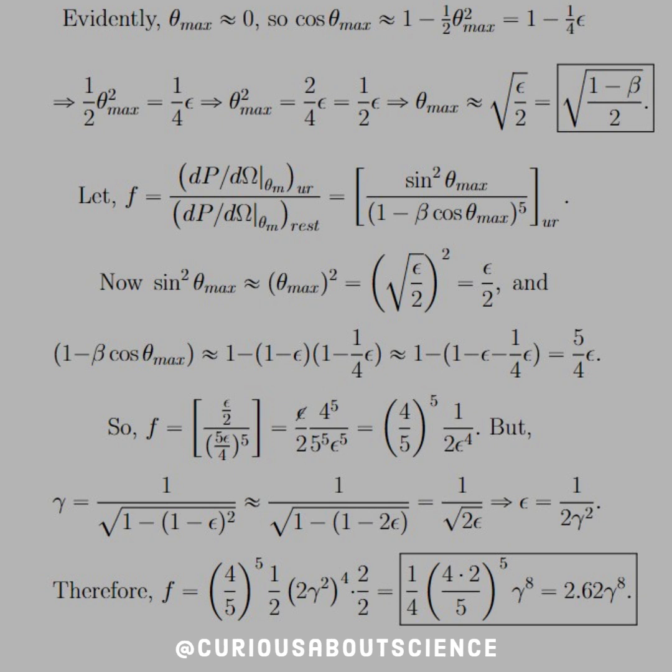So simplify accordingly. So now the ratio becomes epsilon over 2 divided by 5 epsilon over 4 to the fifth power. Cancel away as you see fit. What we're left with is 4 over 5 to the fifth, and then times 1 over 2 epsilon to the fourth.